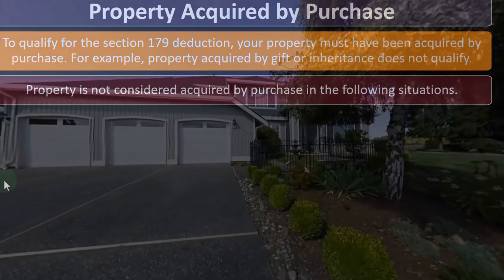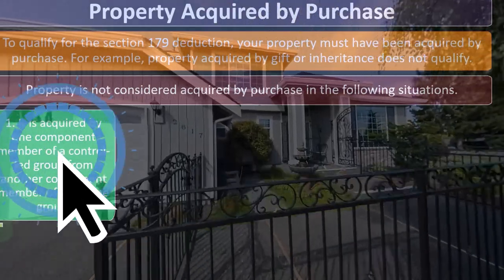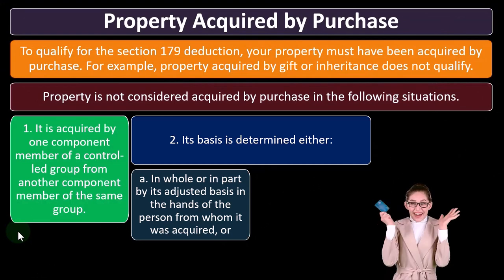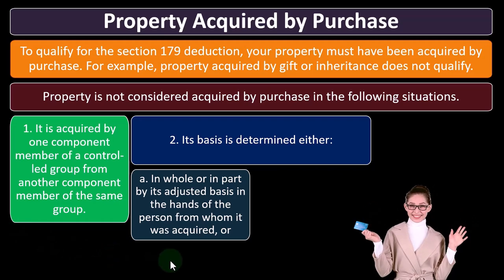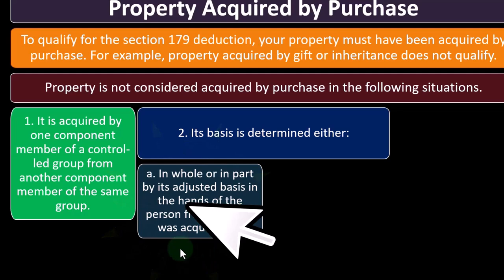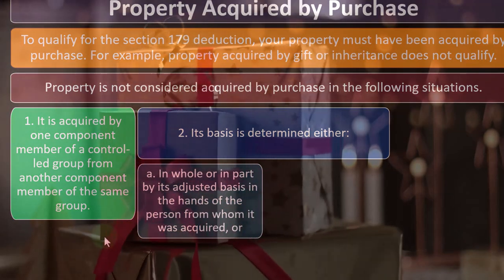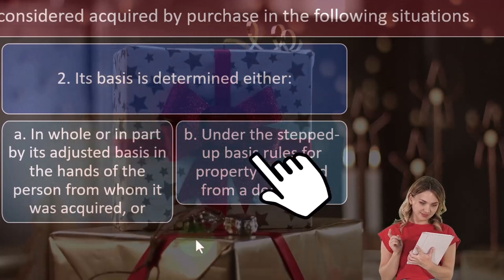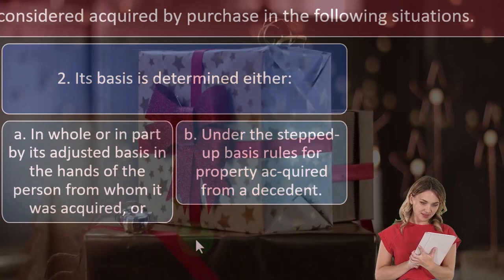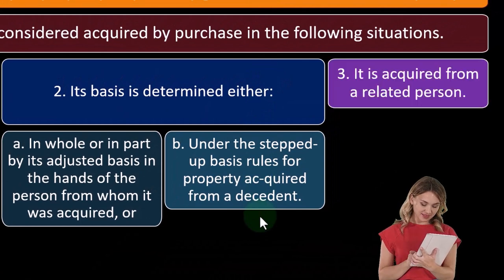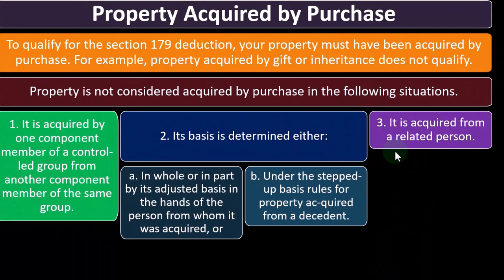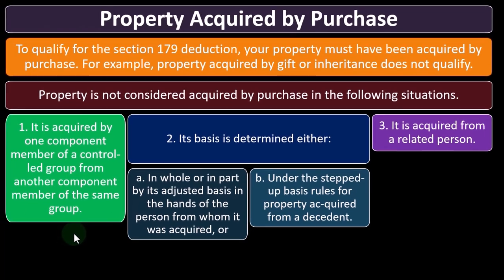Property is not considered acquired by purchase in the following situations: one, it is acquired by one component member of a controlled group from another component member of the same group — essentially a related-party transaction that may not be arm's length; two, its basis is determined in whole or in part by its adjusted basis in the hands of the person from whom it was acquired, which would apply in a gift situation; or under the stepped-up basis rules for property acquired from a decedent, which is an inheritance situation; three, it is acquired from a related person, which again means it may not be a true market transaction.